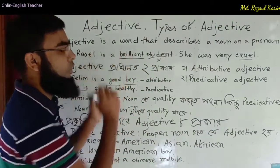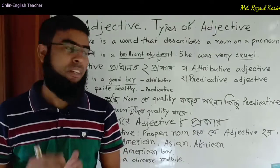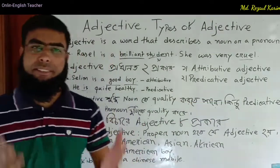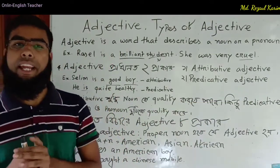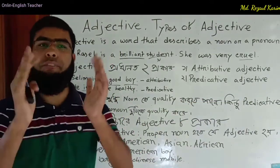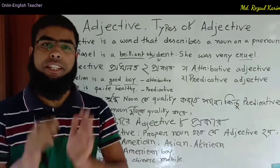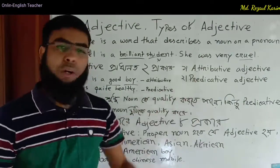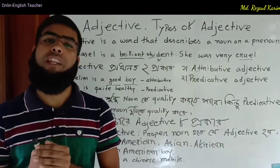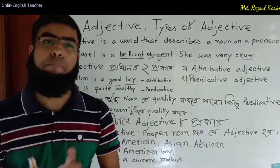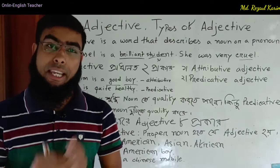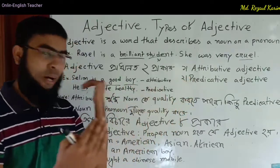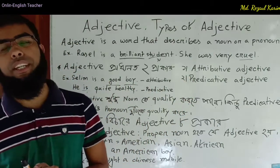Now we have two types: attributive adjective and predicative adjective. The attributive adjective qualifies a noun directly. The predicative adjective qualifies a noun or pronoun through a linking verb. This is used to indicate the pronoun or noun.